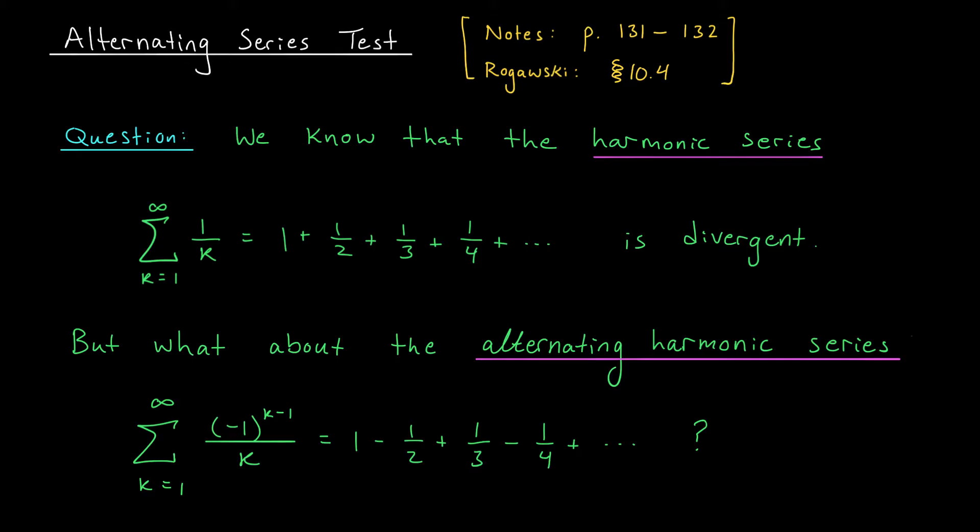For today's lesson, however, I'd like to begin by looking at a related series, the alternating harmonic series. Rather than simply adding the reciprocals of natural numbers, we're going to let the signs flip between plus and minus. So we have 1 minus a half plus a third minus a quarter, and so on.